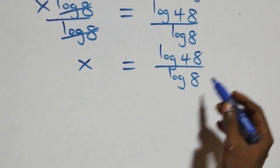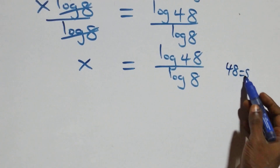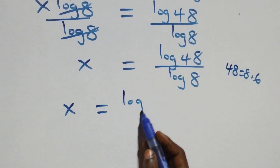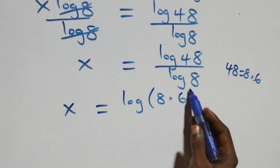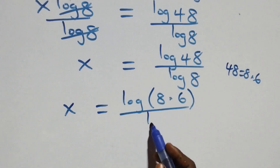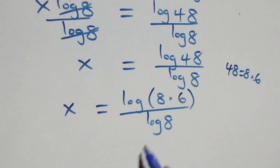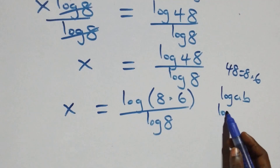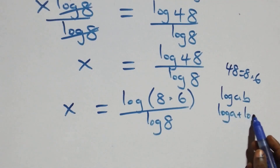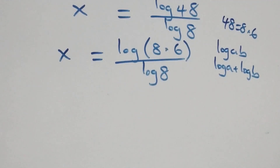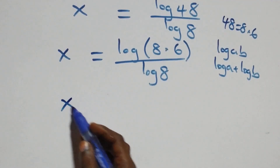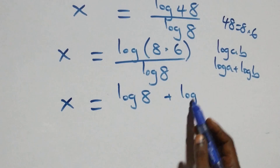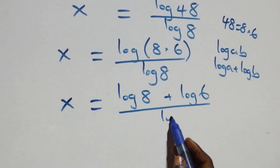From what we have here, we can write 48 as 8 times 6. That is, we have x equals log(8 × 6) over log 8. This follows the law of logarithms: log(a × b) is the same as log a + log b. So this becomes x = (log 8 + log 6) over log 8.